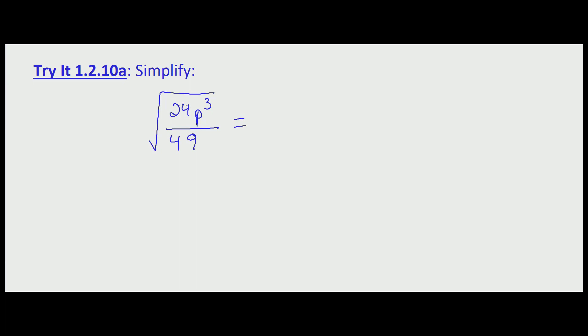In this case, there aren't any common factors between 24 and 49, and there aren't any variables in the denominator. Therefore, we know that we can't simplify under the radical first.